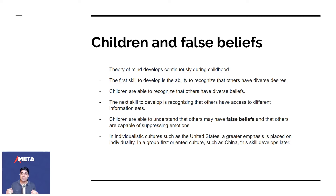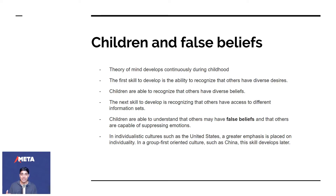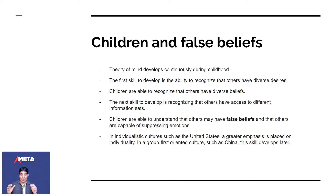The child realizes that maybe that person was happy, even though that person wasn't showing the emotion. Because until that point, if a person is smiling, that person is happy; if a person is sad, that person is sad. But children come to understand that people are capable of suppressing emotions.